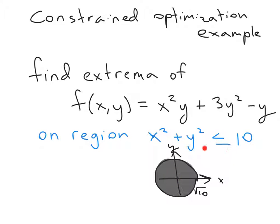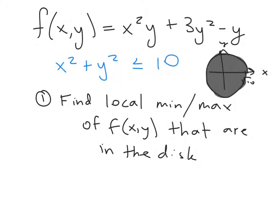This disk includes its boundary, which means it is a closed and bounded region. Since this region is closed and bounded and the function is continuous, our extreme value theorem applies, and we can expect to find global maxima and global minima on this region.